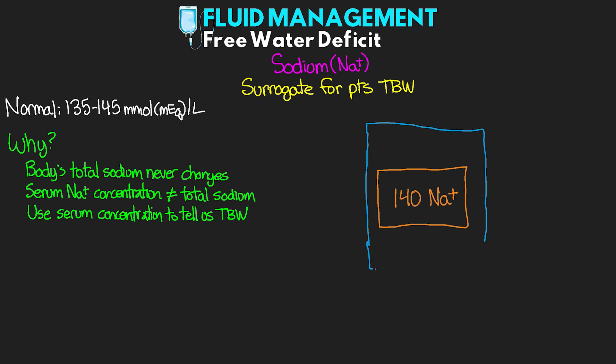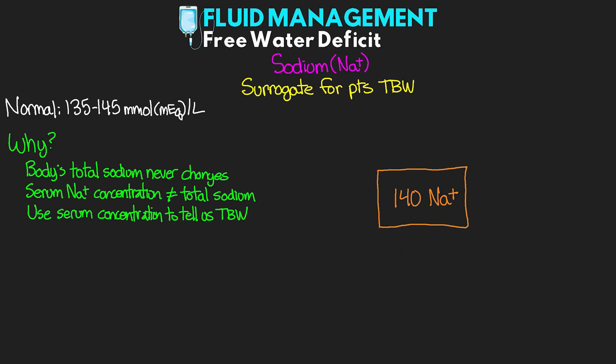If we were to dilute this with one liter of water, then we basically would have 140 millimoles per liter, which would be a normal concentration of sodium that we'd expect. Now, as an extreme example, if we were to take this same 140 millimoles of sodium and dilute this with only 500 mLs of water, we would have a much more concentrated solution. If we were to sample this concentrated blood, we'd see a value of 280 millimoles per liter. Now, this really isn't realistic, but I do want you to understand this relationship.